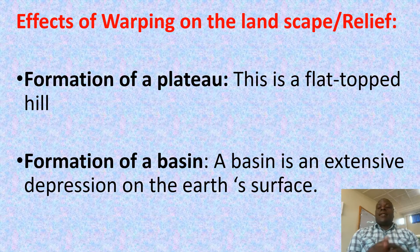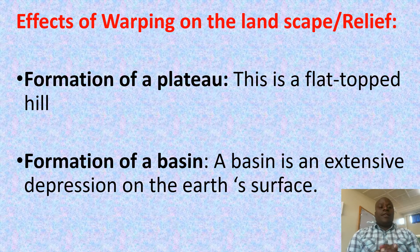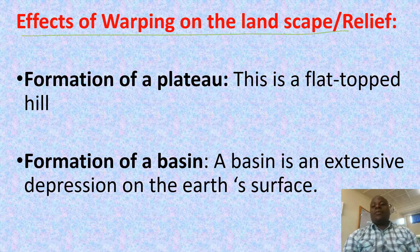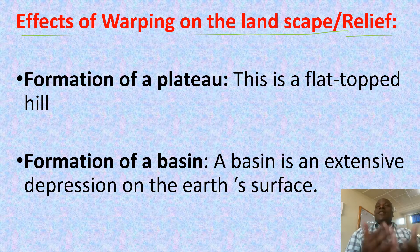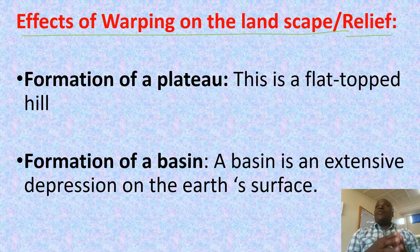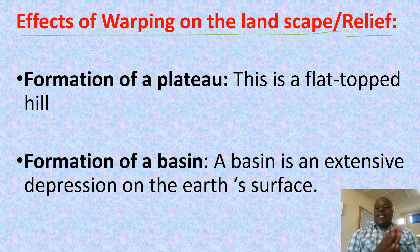Okay class, after understanding the definition and different types of warping, let us look at the effects of warping on the landscape, on relief. If there is down warping or up warping on the landscape on relief, which major physical features do we get?